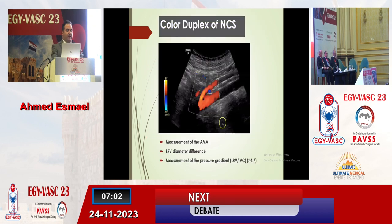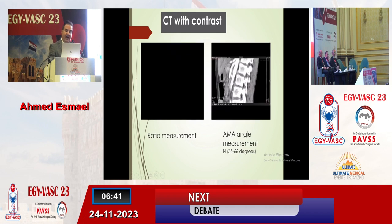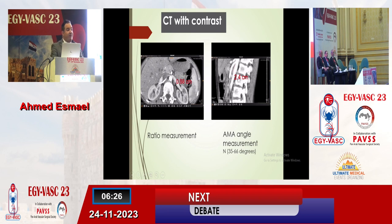We can diagnose Nutcracker syndrome by duplex ultrasound, which can measure the aortomesenteric angle, especially in slim patients, left renal vein diameter difference before and after compression, and pressure gradient between the left renal vein and IVC. CT with contrast can help in the axial view to delineate the ratio measurement and in the lateral view to measure the aortomesenteric angle, which is normally between 35 and 66 degrees. Below 35 degrees can be diagnosed as Nutcracker syndrome with symptoms; without symptoms it is a phenomenon.